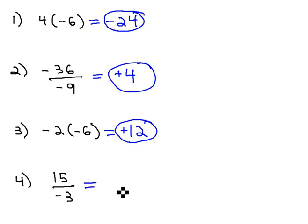On this last example, with division, 15 divided by 3 is 5, and because we have different signs, one positive, one negative, we say our answer is negative. If the signs match, it's positive. If they're different, it's negative, with multiplication and division.